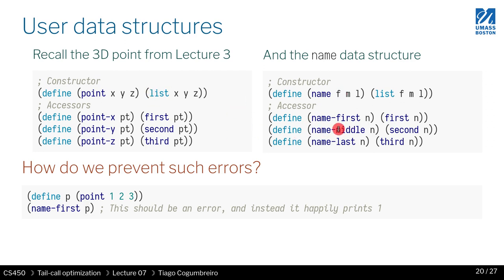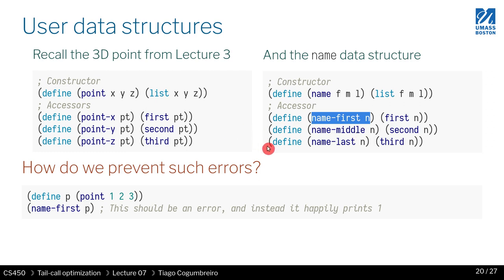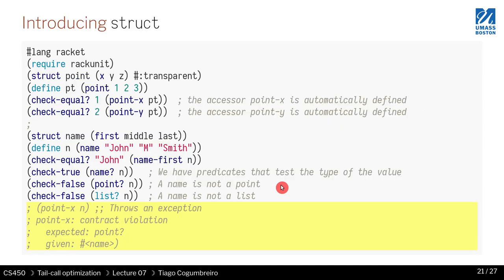You could add some convention — in the book, you set the name of a type in the first field and use that to check. You could think of a list with a special symbol for each type, and before calling name-first you check whether that list is a name or something else. But that's still brittle — you could generate some random list read from input that accidentally becomes a valid name because of that symbol. That's something you want to avoid, and the Racket programming language actually supports the idea of a struct.